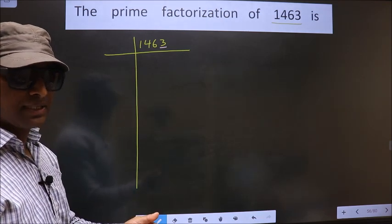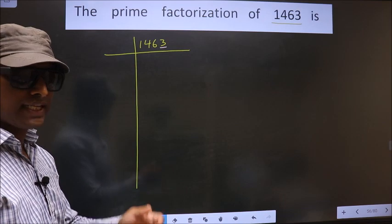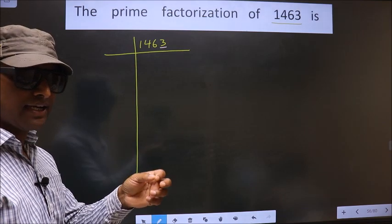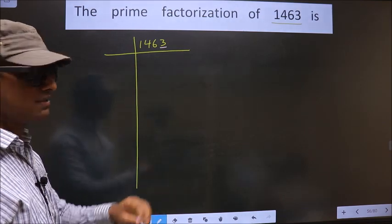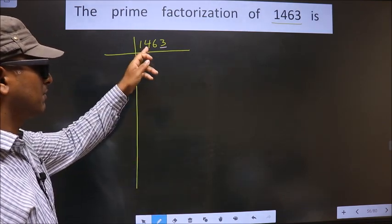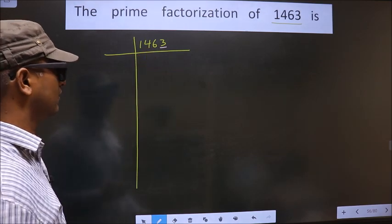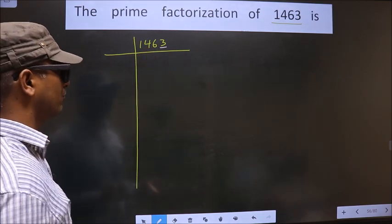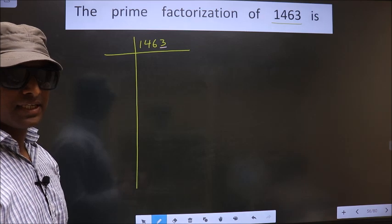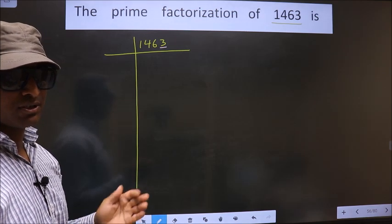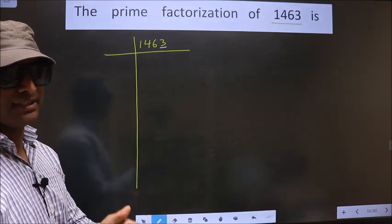The next prime number is 3. To check divisibility by 3, we should add the digits. That is, 1 plus 4 plus 6 plus 3. We get 14. Is 14 divisible by 3? No. So, this number is also not divisible by 3.